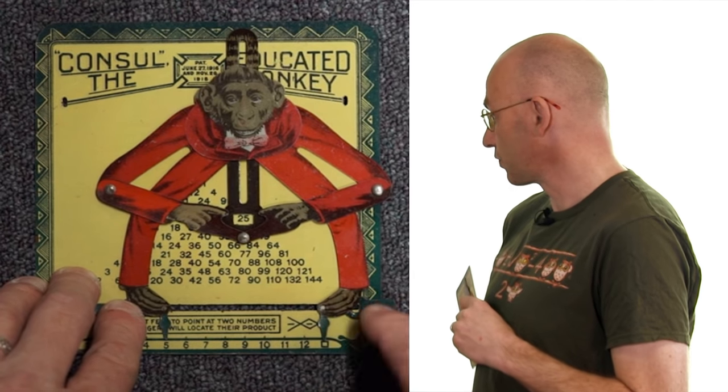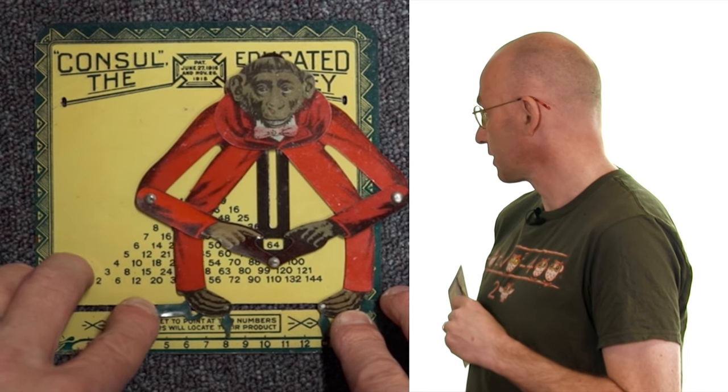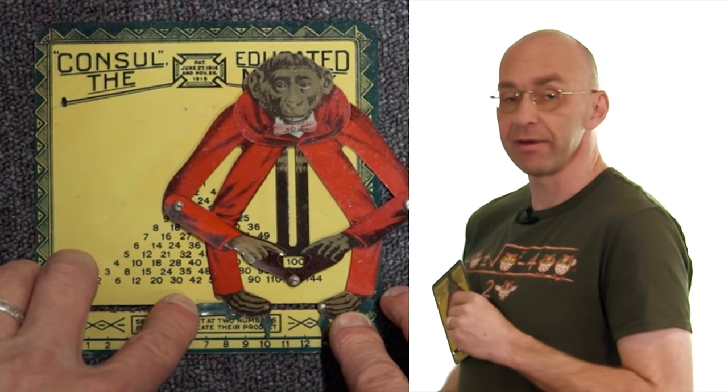And to get the other squares we just move that leg there. So we move this leg: 36, 49, 64, 81 and 100.